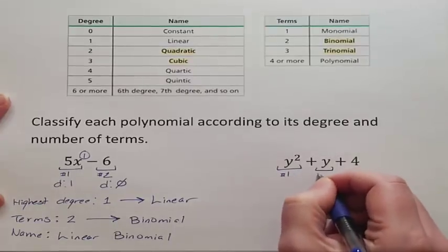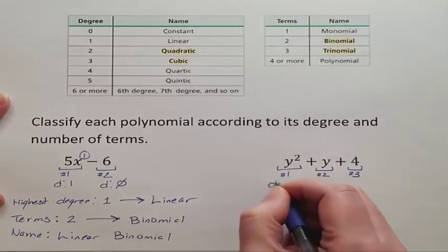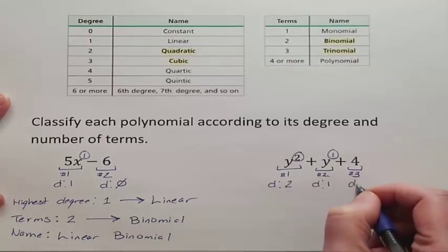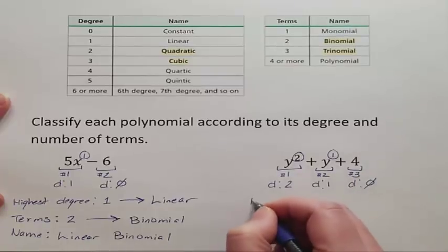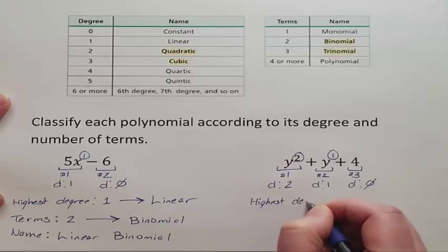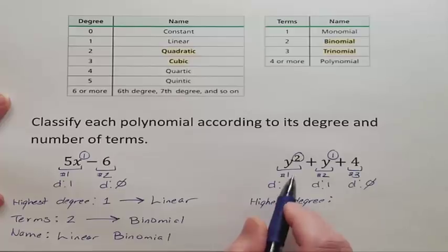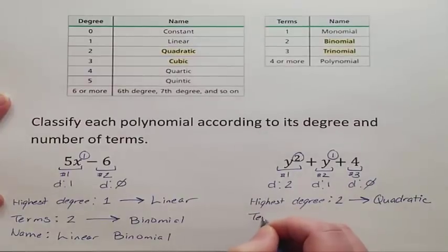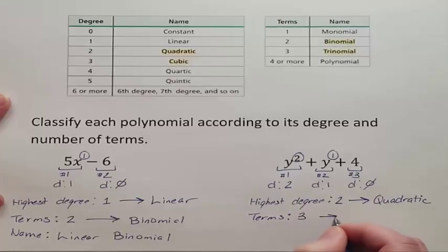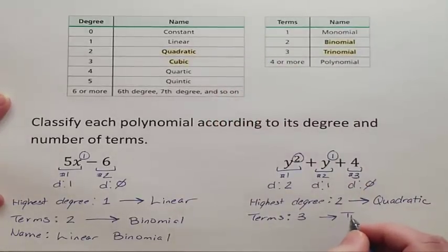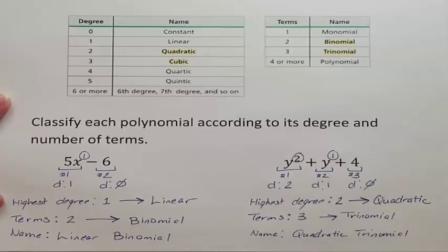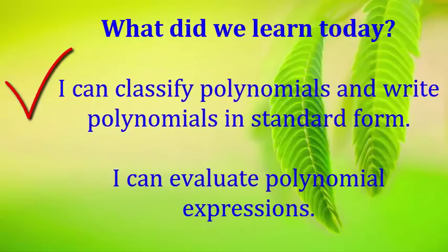The next polynomial has 3 monomials with degrees 2, 1, and 0. The highest degree is 2, so the first name is quadratic. It has three terms, so it's a trinomial. The full name is quadratic trinomial. What did we learn today? I can classify polynomials and write polynomials in standard form. I can evaluate polynomial expressions.